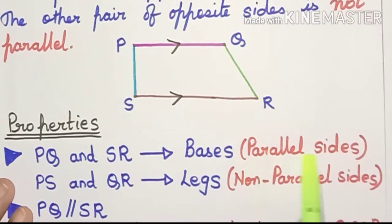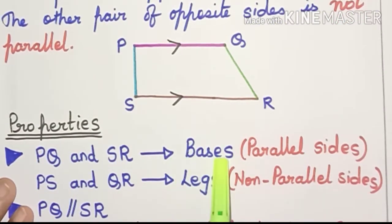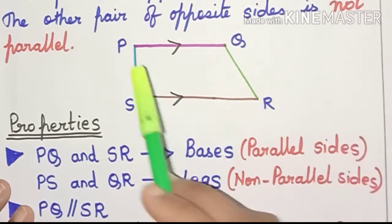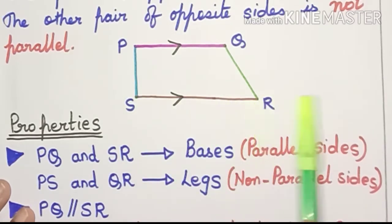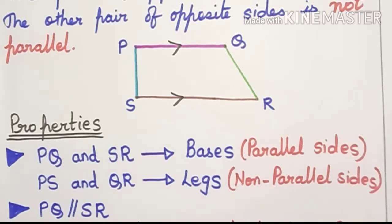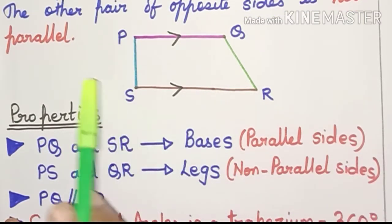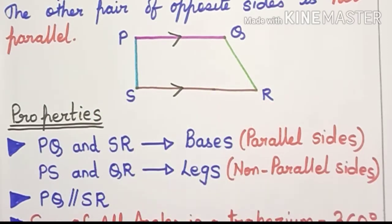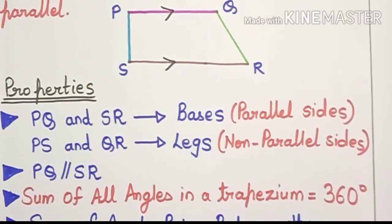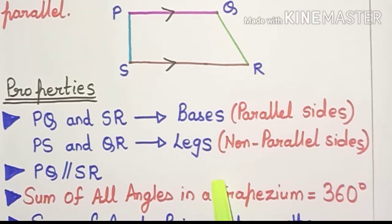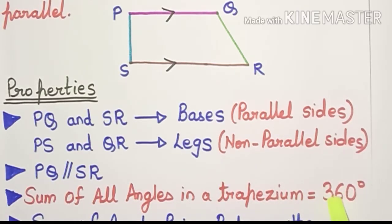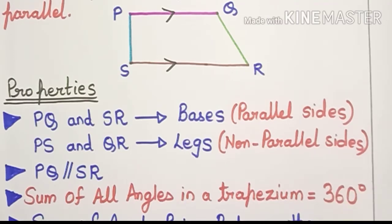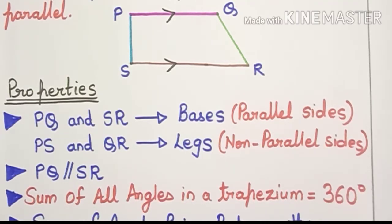These parallel sides are known as the bases. So in this figure, PQ and SR are going to be the bases of the trapezium. Whereas the non-parallel sides PS and QR are known as the legs of the trapezium. So PQ is parallel to SR. And as every trapezium is a quadrilateral, the sum of all angles in a trapezium will always be 360 degrees. This property is inherited from the quadrilateral.